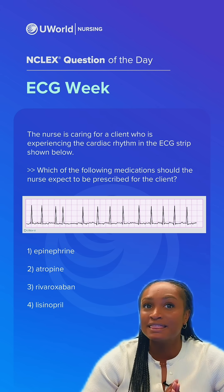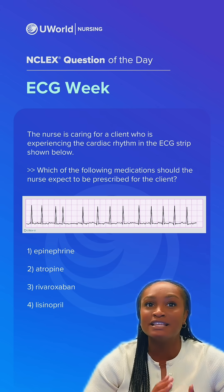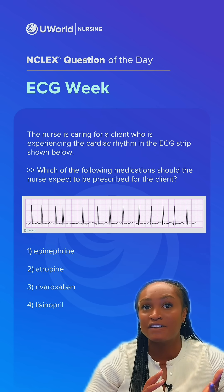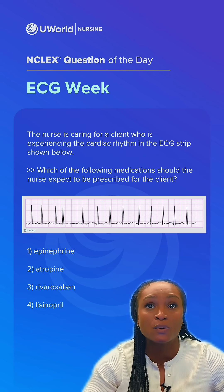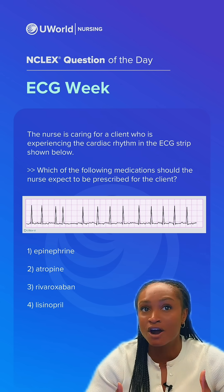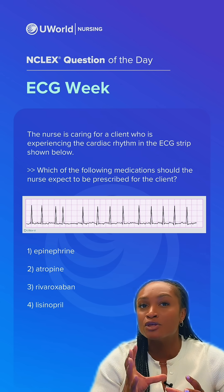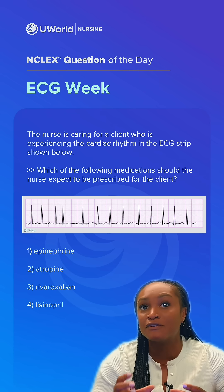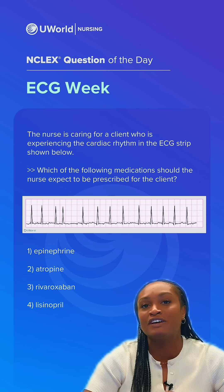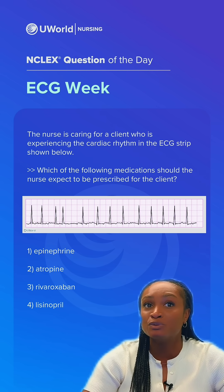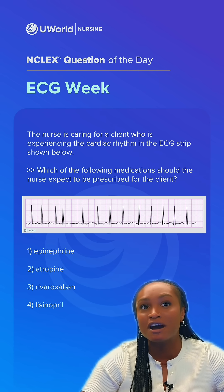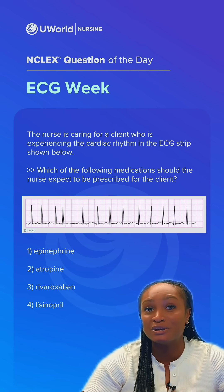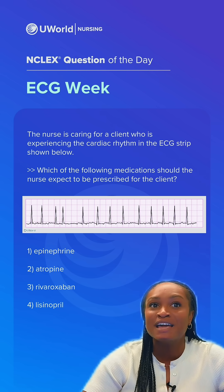With that, we know that clients who have atrial fibrillation are on anticoagulants, so clots don't form in the heart from all the pooling blood from the quivering atria. That would be option three — rivaroxaban, also known as Xarelto.